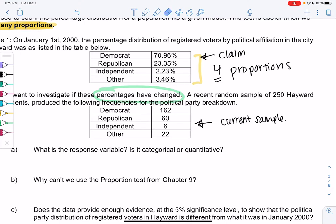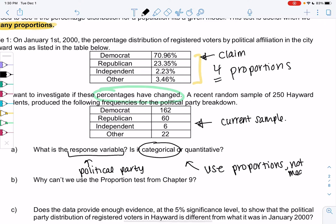What is our variable here? Our variable are the categories, which would be the political party. Is political party categorical or quantitative? It's categorical because it's described in words. Anytime we have categorical, that's when we use proportions and not means. Means are for numerical data. Why can't we use the previous proportion test? Because we have more categories - we have four categories now.